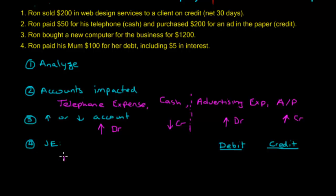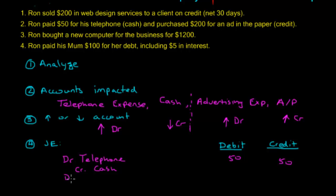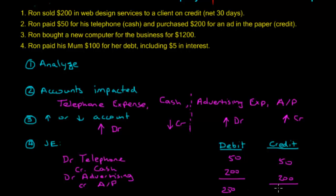To record all this, we list the debits first. We debit telephone expense for $50, and credit cash for $50. We then debit advertising expense for $200, and credit accounts payable for $200. You can include a description as well. The total debits are $250 and the total credits are $250, so everything balances. That's how you create the journal entries for this transaction.